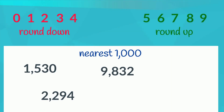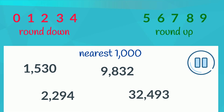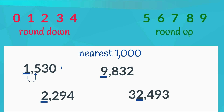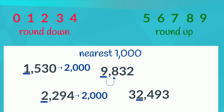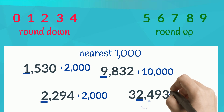Try rounding the following numbers to the nearest thousand by yourself. Pause here while you work. Here are the thousands in each number. Now to decide whether each number will round up or down, we must look to the digit in the place value to the right — the hundreds. 5 rounds up, so 1,530 rounds up to 2,000. 2 rounds down, so 2,294 rounds down to 2,000. 8 rounds up, so 9,832 rounds up to 10,000. 4 rounds down, so 32,493 rounds down to 32,000.